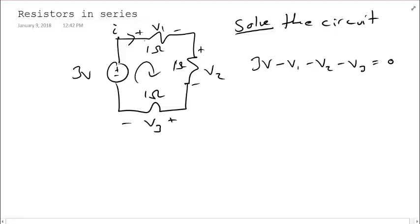By Ohm's law, I have a current through a resistance to give me a voltage. So, V1 really is I, the unknown current, multiplied by the resistance, which is 1 ohm. Similarly, V2 is I times 1 ohm, and V3 is I times 1 ohm as well.